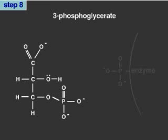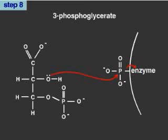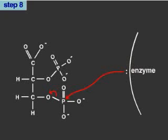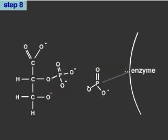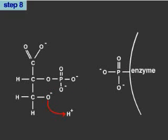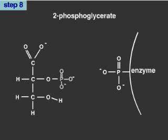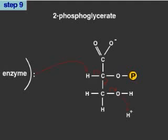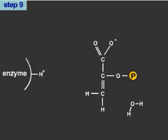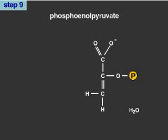In the 8th step, 3-phosphoglycerate, which has a relatively low free energy of hydrolysis, is transformed by the enzyme phosphoglycerate mutase into 2-phosphoglycerate. In the 9th step, the enzyme enolase removes a water molecule from 2-phosphoglycerate, creating phosphoenolpyruvate. The loss of water redistributes energy within the molecule, creating a phosphate group with an extremely high free energy of hydrolysis.